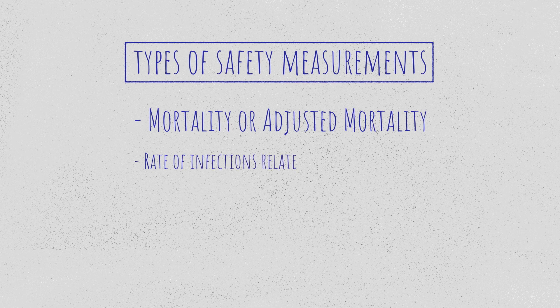There are other outcome measures — for example, the rate of infection associated to invasive devices, the rate of catheter-related bloodstream infections, the rate of ventilator-associated pneumonia, and the rate of urinary tract infection associated to urinary catheters. Those outcome measures need to be monitored in the ICU and they reflect the safety in the ICU.